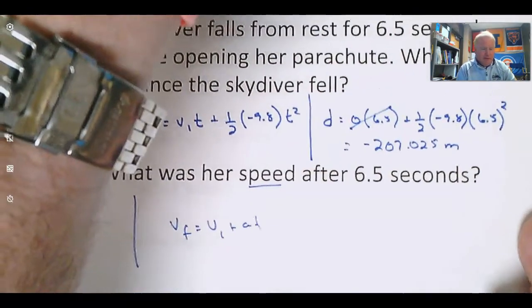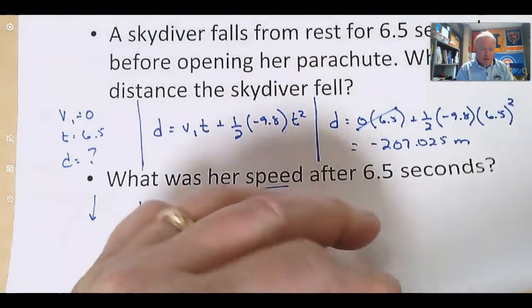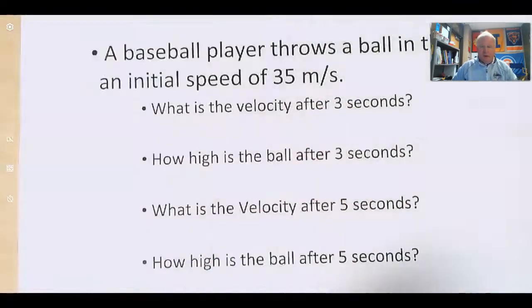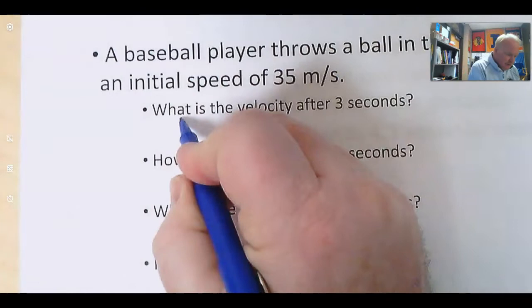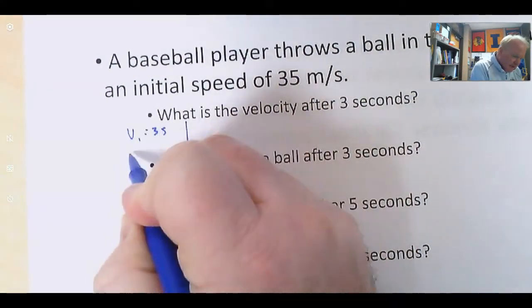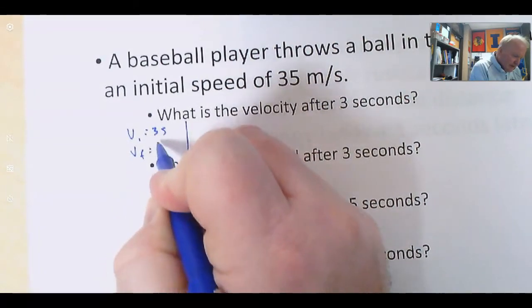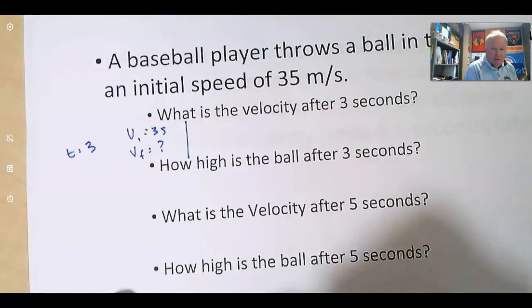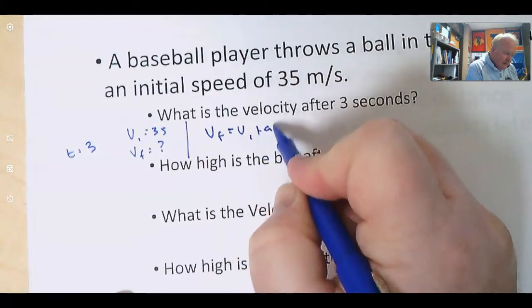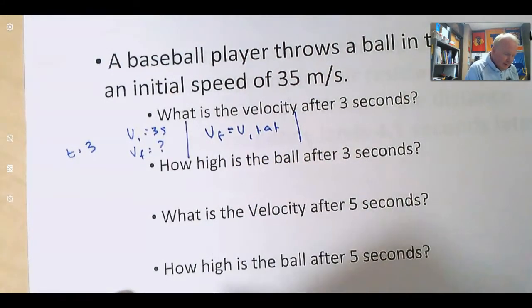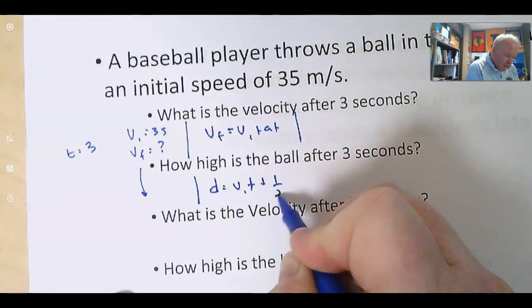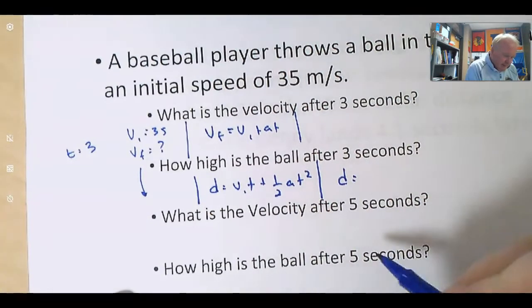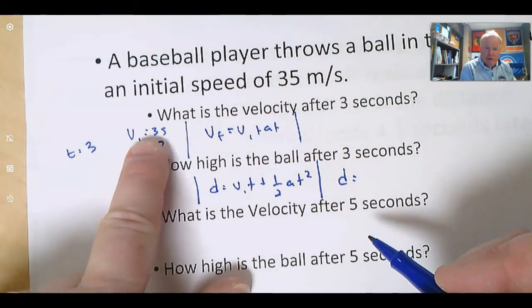What if we, instead of dropping a ball, we throw it up? A baseball player throws a ball in the air with an initial speed of 35. What's the velocity after three seconds? We'll just do the four-column method. This time our initial velocity is 35, our final velocity is what they ask us to find, and our time is three seconds. You guys can use that equation. VF equals VI plus AT, and plug that in. But how high is the ball after three seconds? It's the same initial stuff, but they're asking us the distance. D equals VI T plus 1 half AT squared.